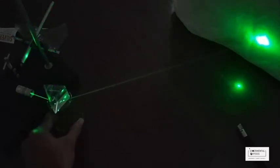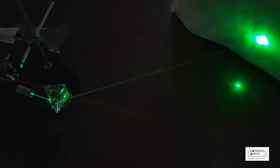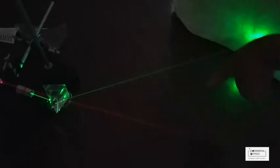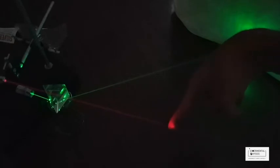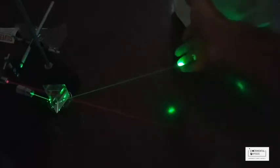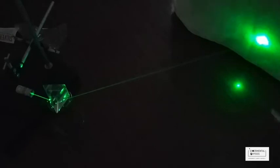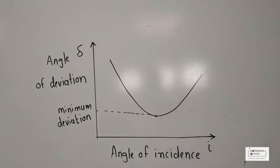So this is where we get our minimum deviation. You can see it here — this is my red laser, and this is the minimum deviation. You can also see the graph that is always given in the textbook, which I'll now discuss.